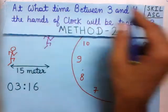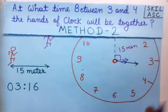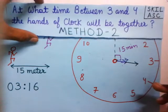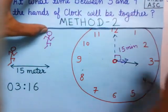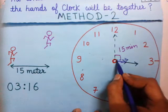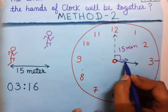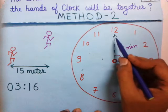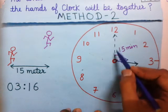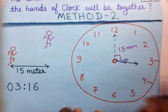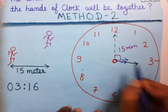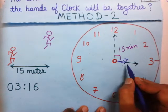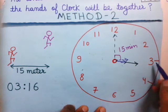To get a better idea about this question, we represent it in the form of a diagram. Here you see the clock. According to the question, the time must be between 3 and 4. This is the hour hand and this is the minute hand. You should not notice the dotted hands right now — only these hands, which are showing that the time is between 3 and 4.